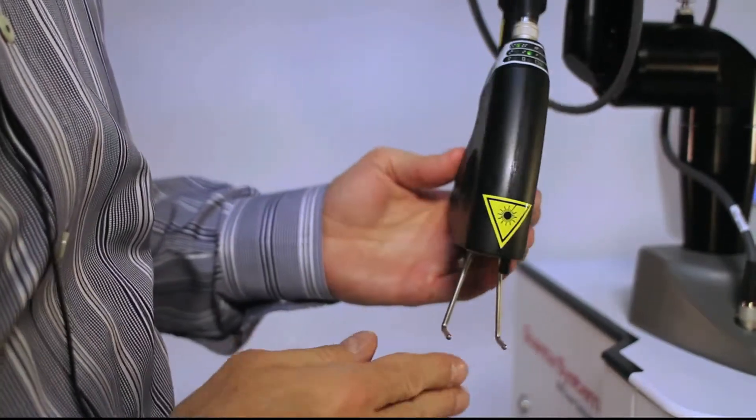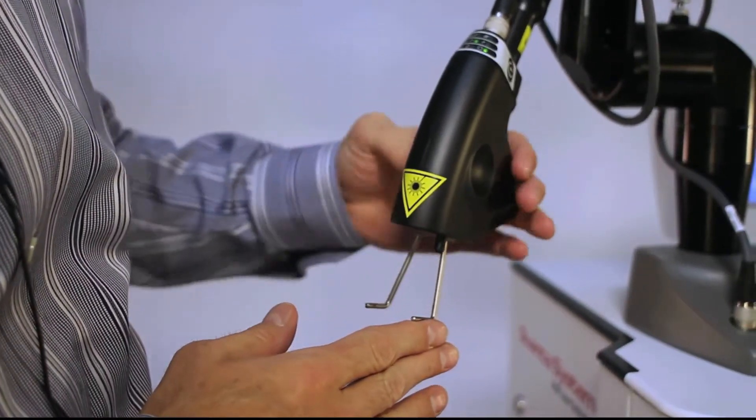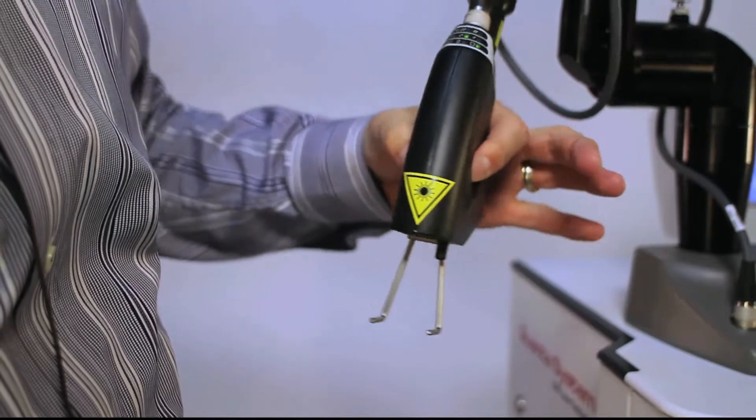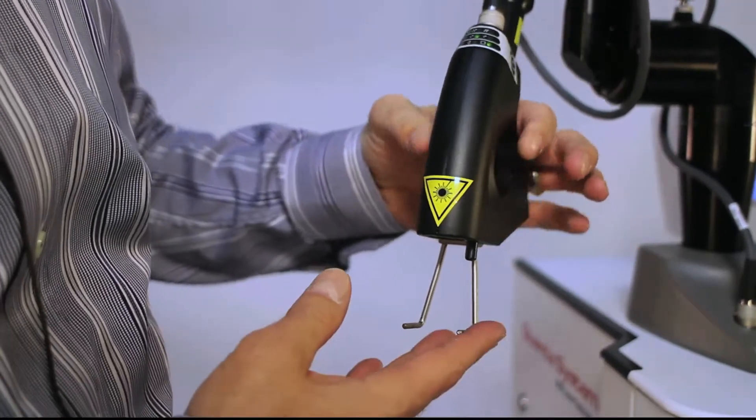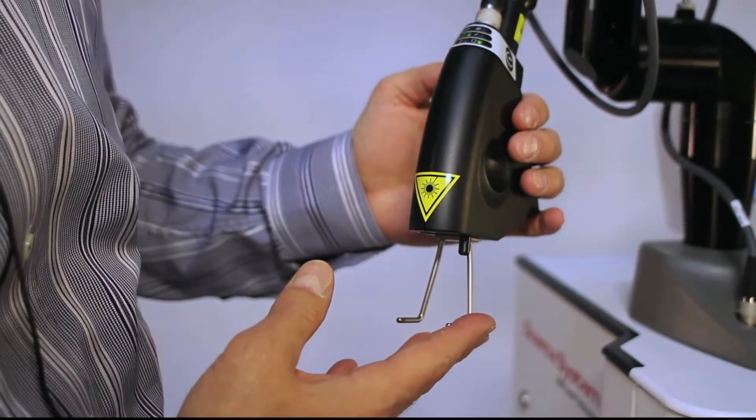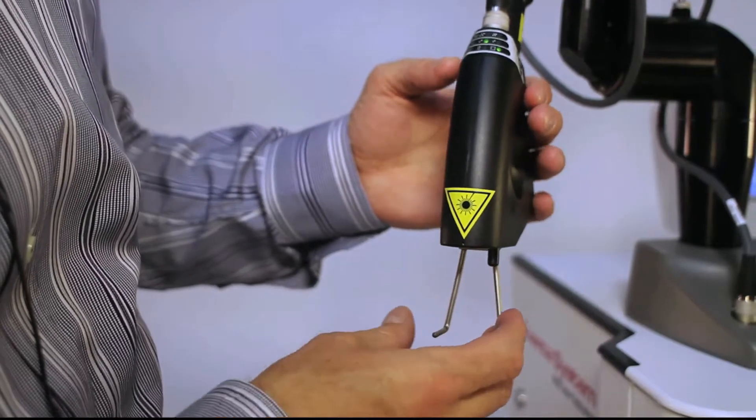This is the handpiece on the Ulaser Fractional CO2. As you can see, it's very light, very ergonomic, and you can adjust most of your settings from the handpiece itself.